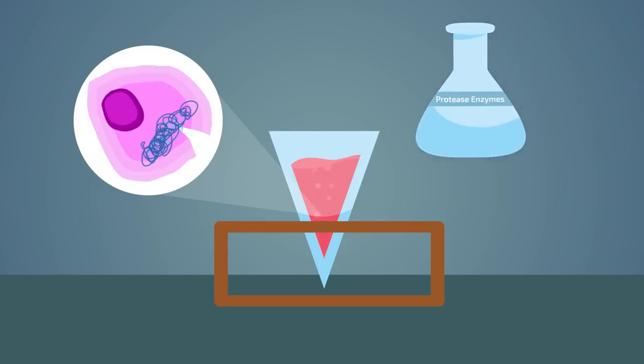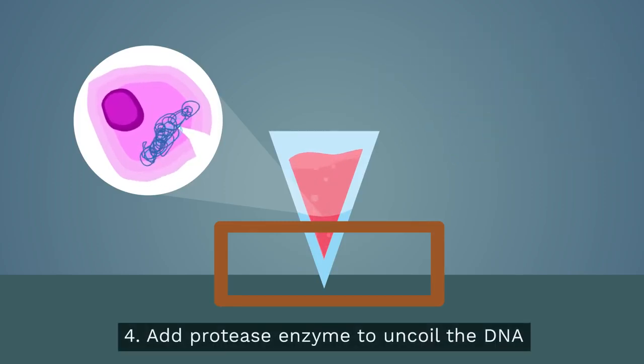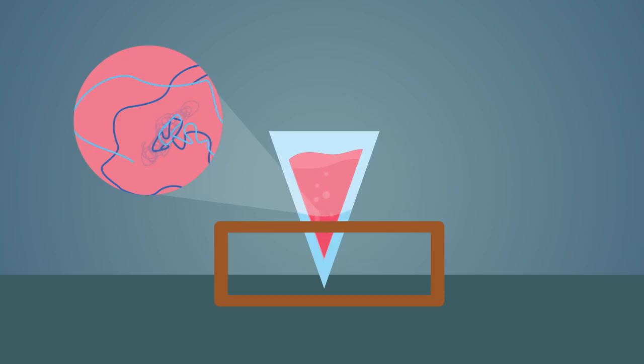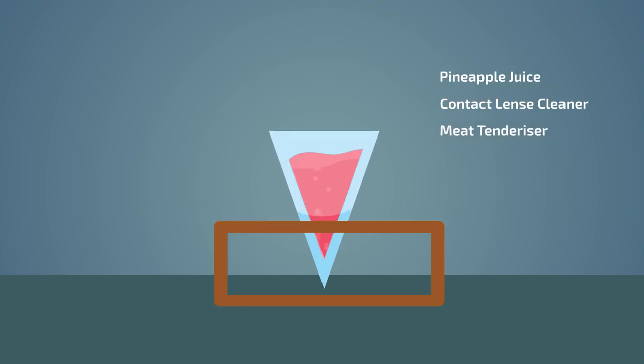Adding a pinch of protease enzyme will help break down the proteins the DNA is wound tightly around. The DNA will uncoil and will now be present in the mixture as long strings. You can use pineapple juice, contact lens cleaner or a pinch of meat tenderiser. These all contain protease enzymes.